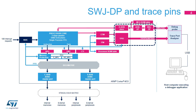Regarding the trace output, the TPIU offers two possibilities: either the asynchronous one-wire trace port called serial wire output, or SWO, or the synchronous five-wire trace port, including a clock signal and one, two, or four bits of data. The SWO is multiplexed with the JTAG JTDO signal.